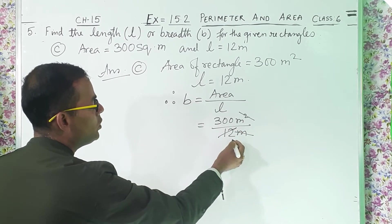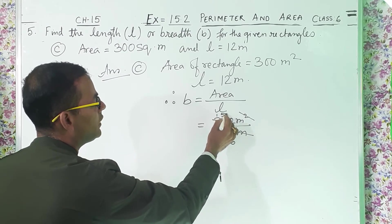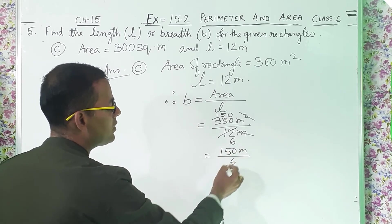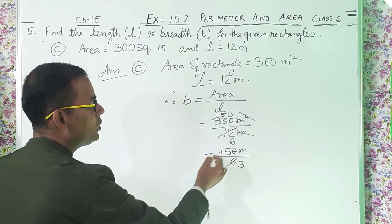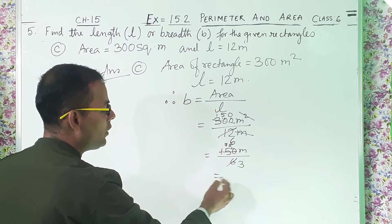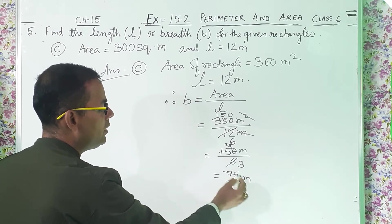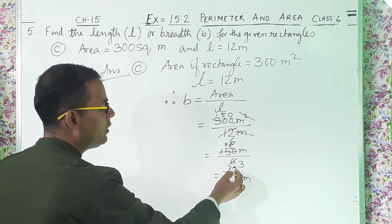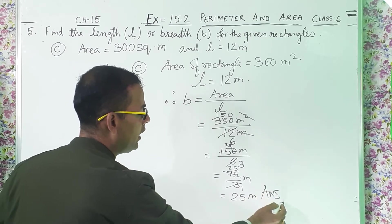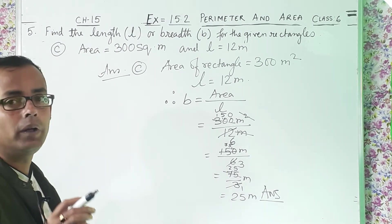Step by step: 2 sixes are 12, 2 ones are 2 one carry 10, 2 fives are 10, then 0. Then 150 meter by 6. Again, 2 threes are 6, 2 sevens are 14 one carry, 2 fives are 10. So you get 75 by 3 meters. Again cut: 3 ones are 3, 3 twos are 6, 3 fives are 15. So you get 25 meters and this is the answer.